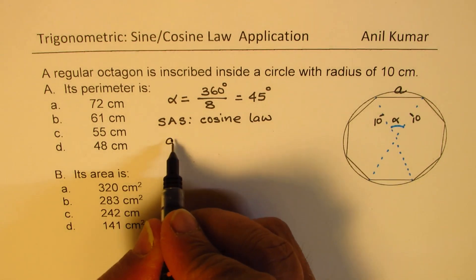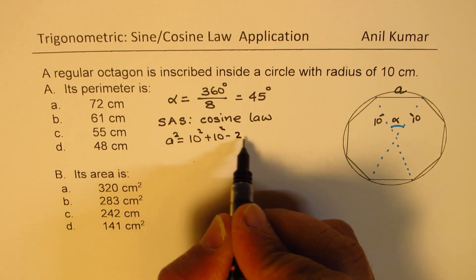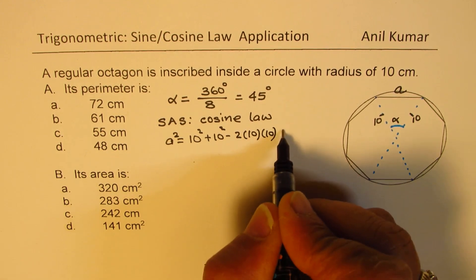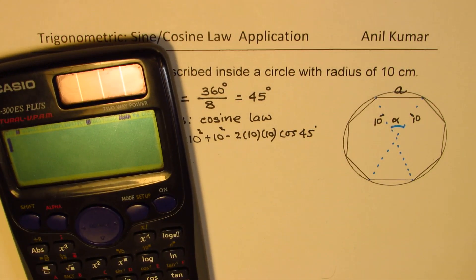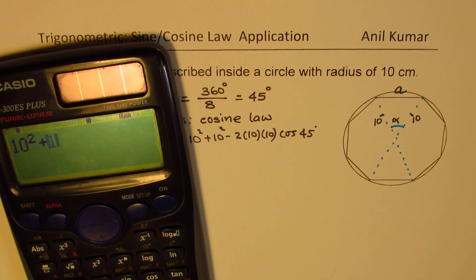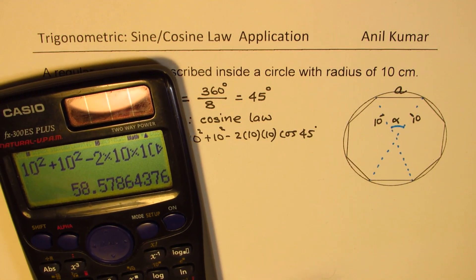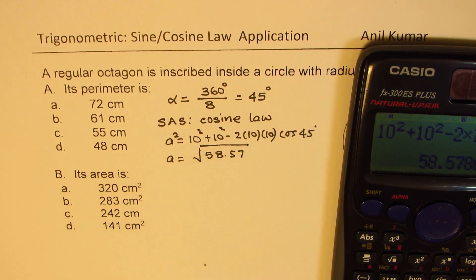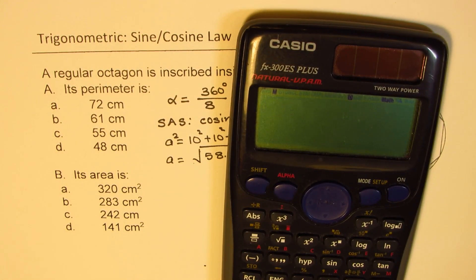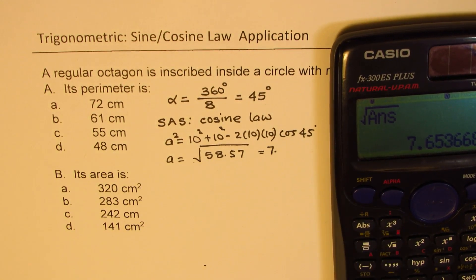Applying the cosine law: A² = 10² + 10² − 2 × 10 × 10 × cos(45°). That gives A² = 58.5786, so A = √58.57 ≈ 7.67.